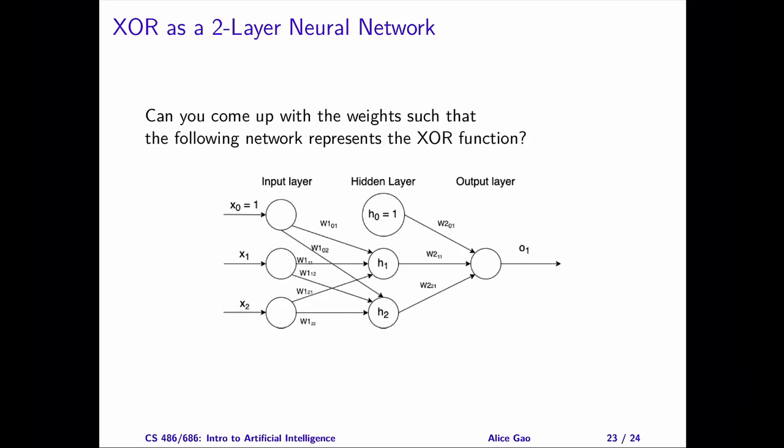Given this network structure, how can we set the weights such that the network represents the XOR function? For now, the best approach to solve this problem is to reason mathematically. Think back to your logic class. Can you break down XOR into simpler logical functions that we already know how to represent using a perceptron? Once we do this, we can set the weights to represent the simpler logical functions. Pause the video and try solving this problem yourself. Then, keep watching for the answer.